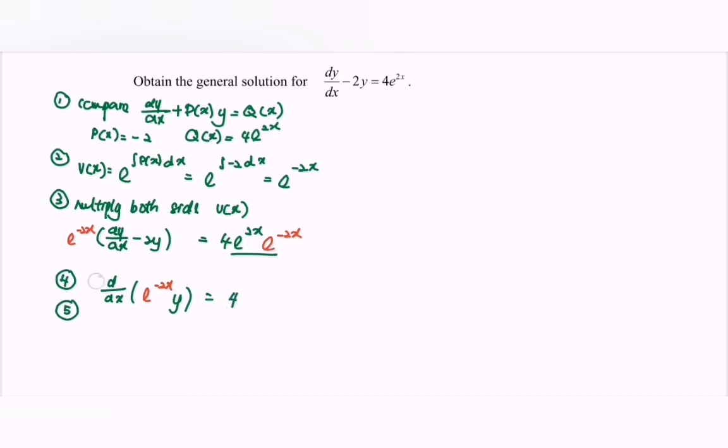So step number 5, integrate both sides with respect to x. So e^(-2x)y is equal to 4x plus c. So y will be equal to, we have the 4x plus with the c over e^(-2x). So y will be equal to 4x·e^(2x) plus with the c·e^(2x).